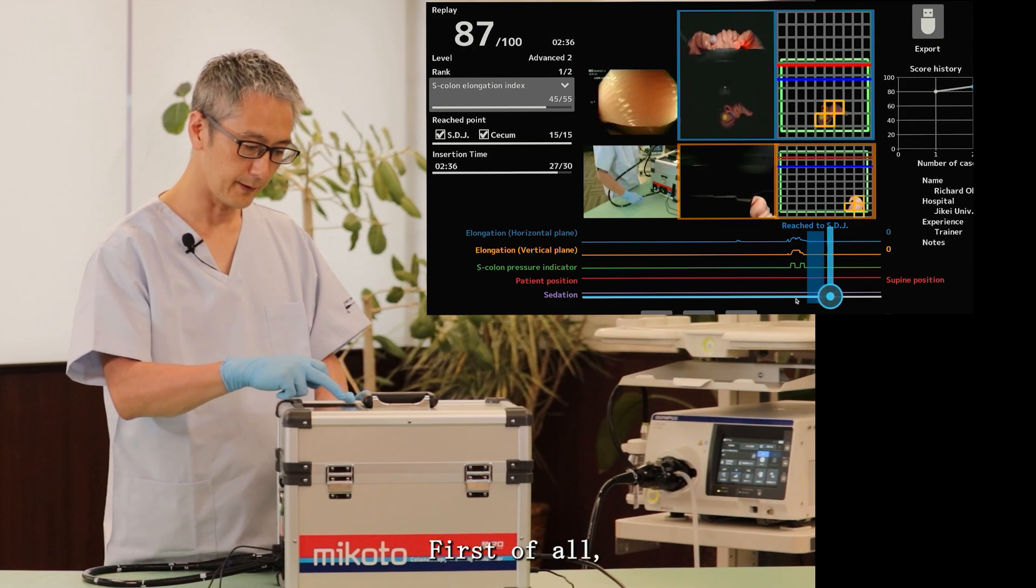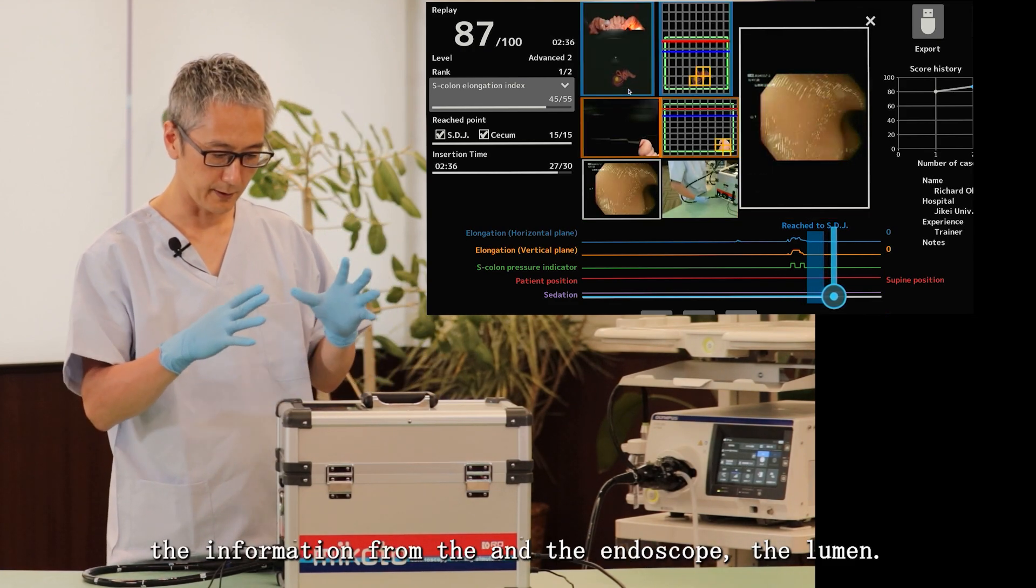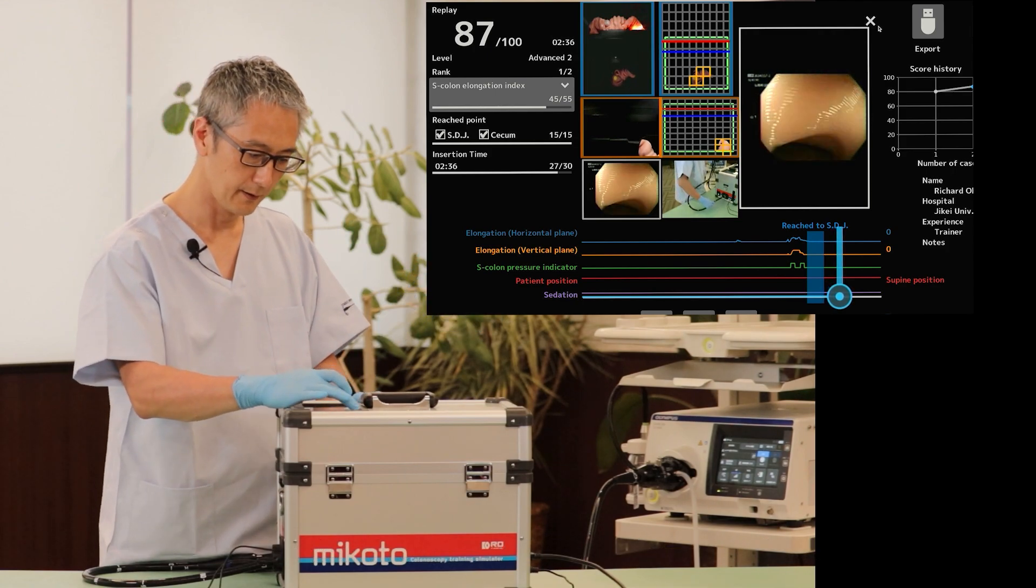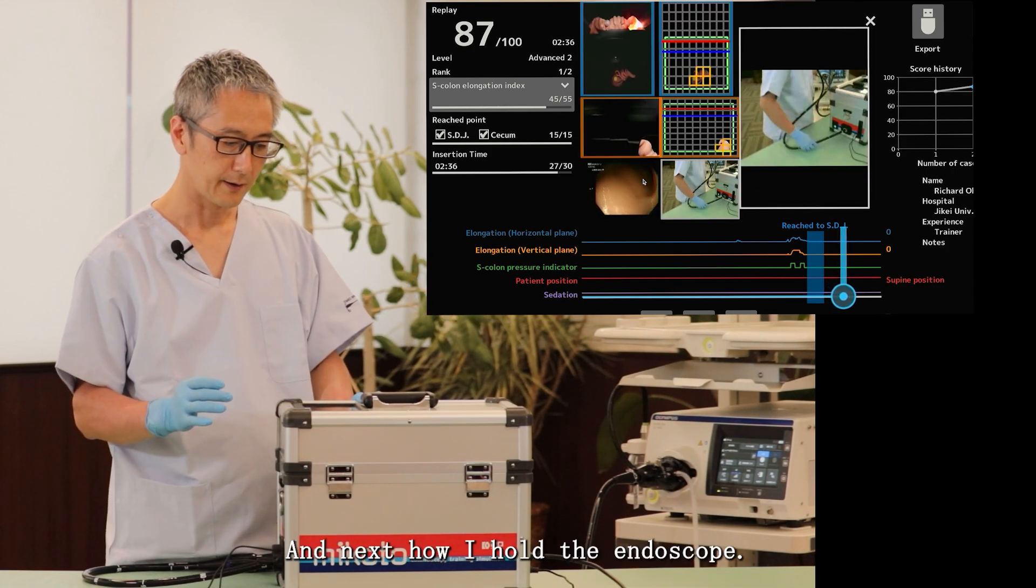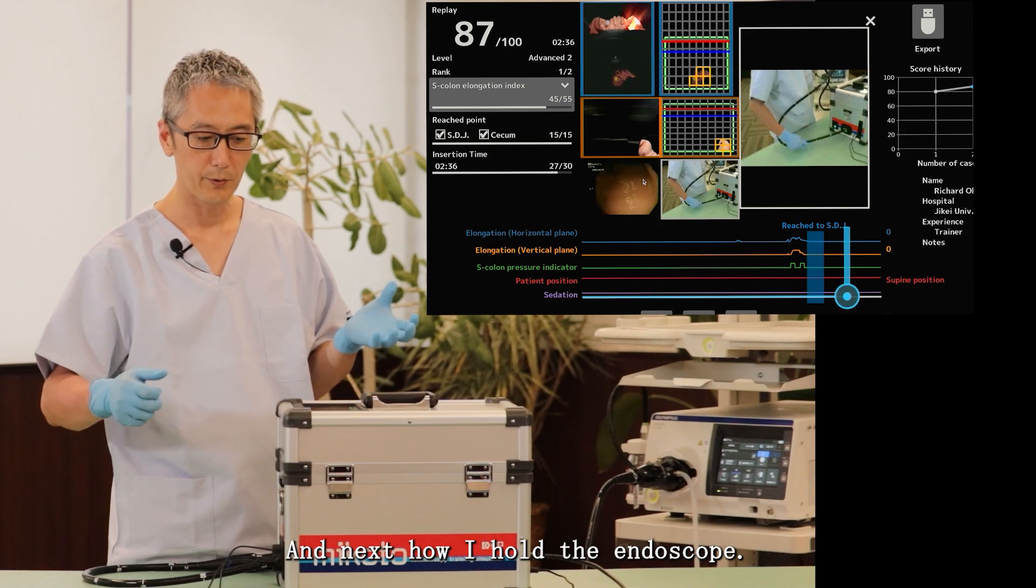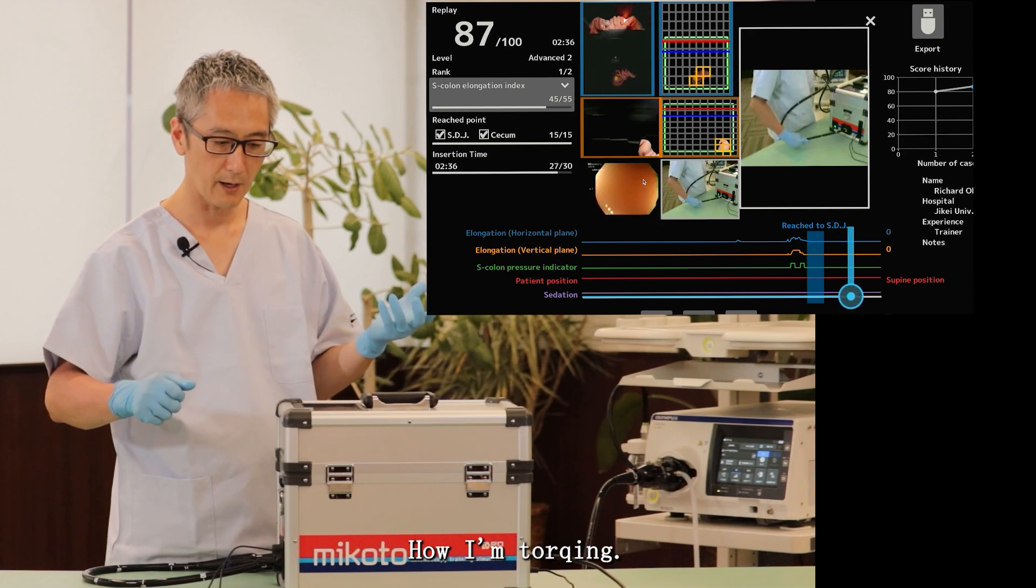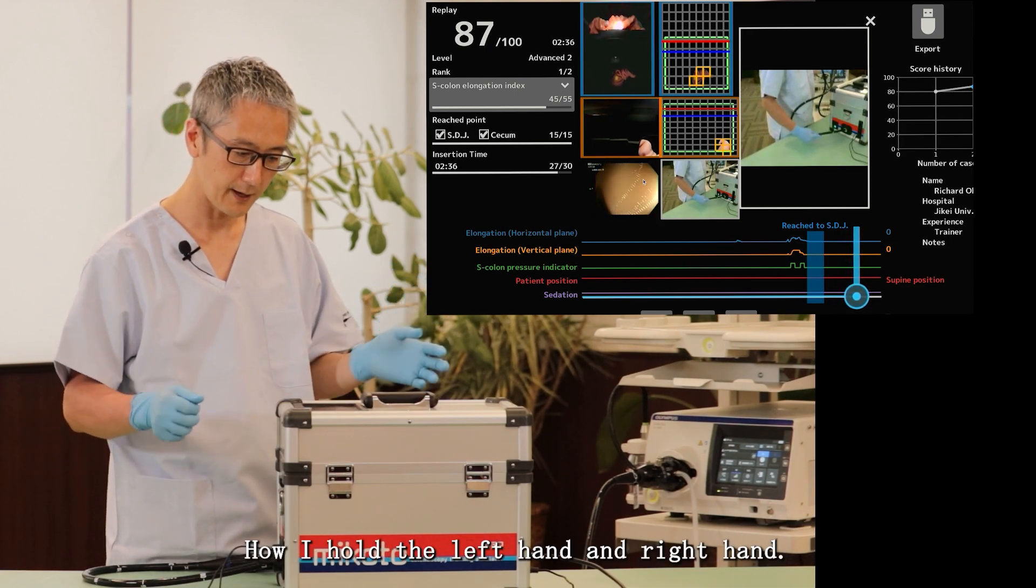First of all, the information from the endoscope, the lumen. Next, how I hold the endoscope, how I'm torquing, how I hold the left hand and right hand.